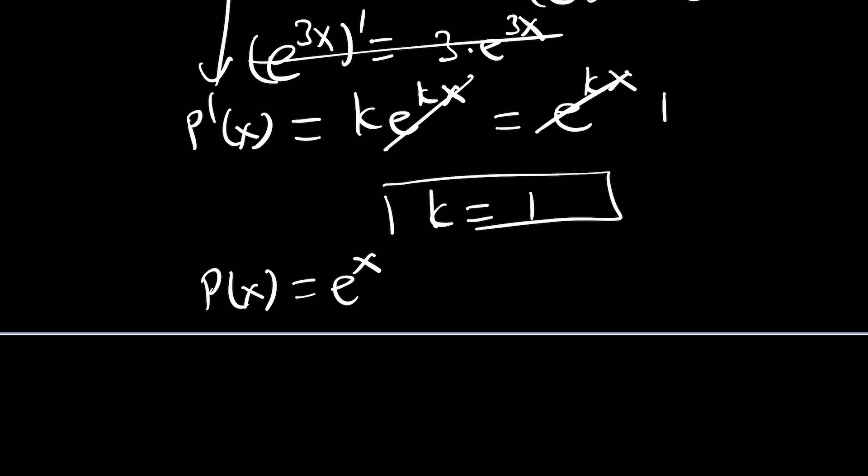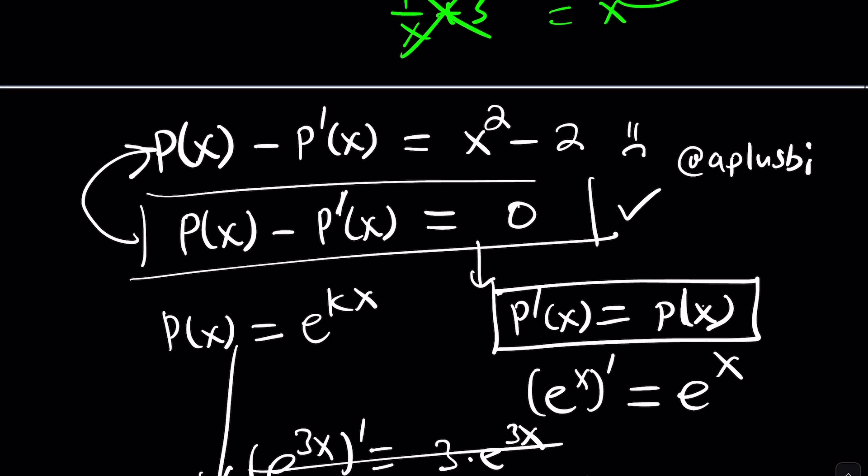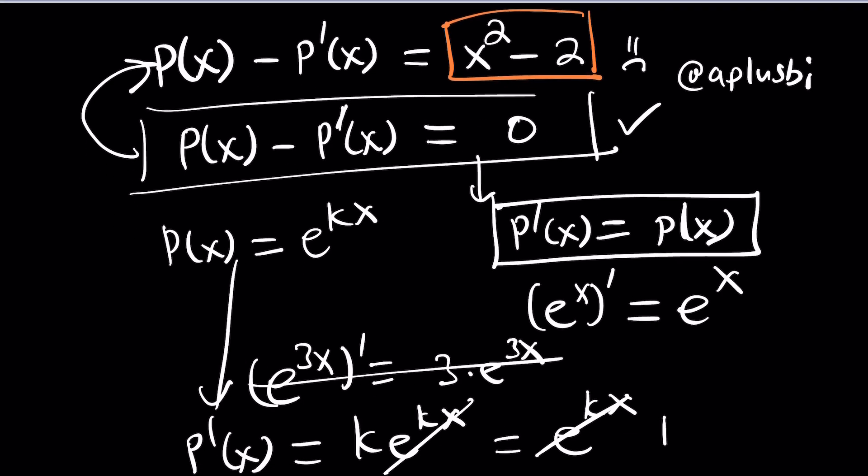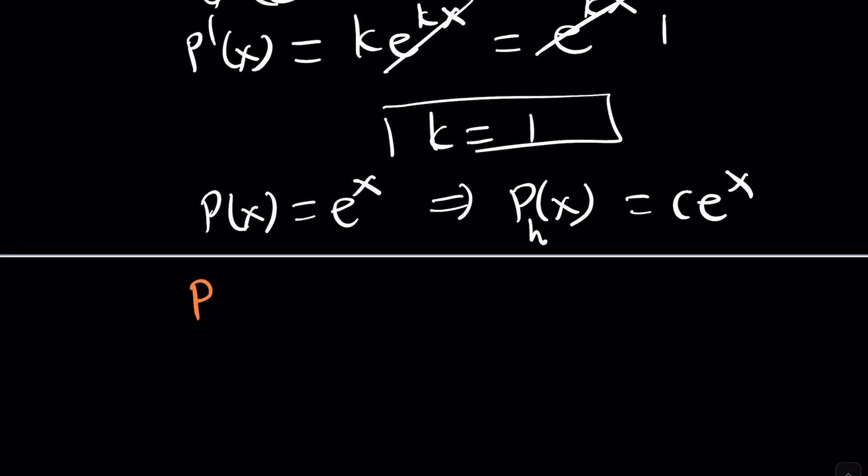So P is e to the x. Well, you know what that means? It could also be a constant times e to the x. So if e to the x works, then c times e to the x will also work. Awesome. But again, don't think P has to be a polynomial in this case, it's a function. So c times e to the x is a valid solution, but there is a solution for the homogeneous case. We do need a non-homogeneous solution.